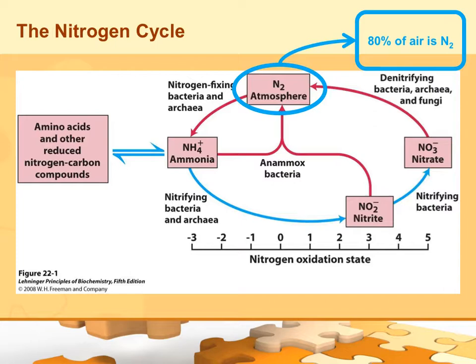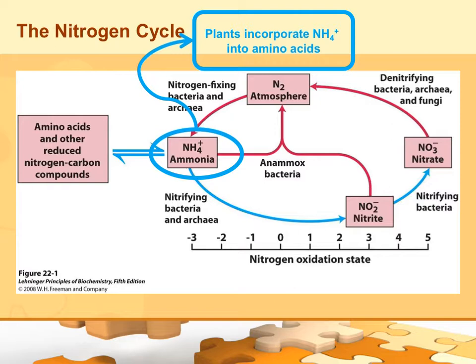80% of the air is actually nitrogen, not oxygen. I've been amazed sometimes when I ask what's the number one component of air and how many people say oxygen — it's not, it's nitrogen. Starting on the left of the cycle, plants actually take ammonia and with nitrogen fixation they can incorporate it into amino acids, which is one way that we can get nitrogen into our diet.